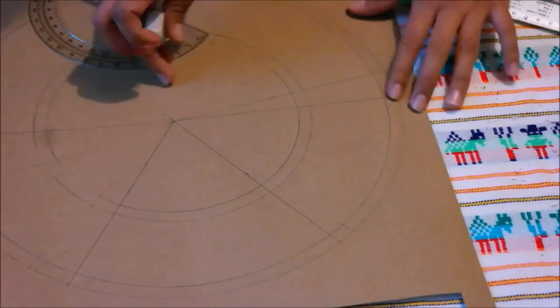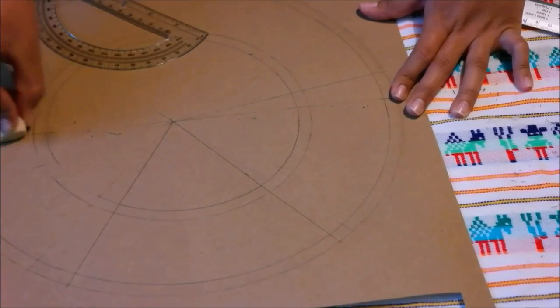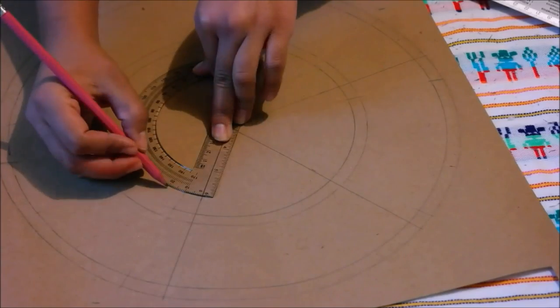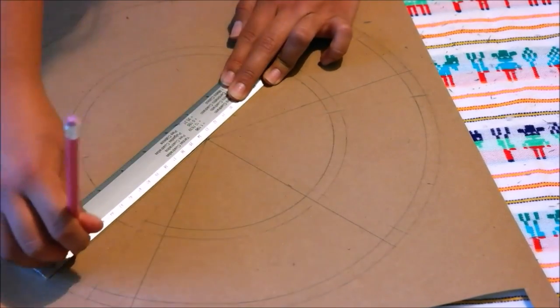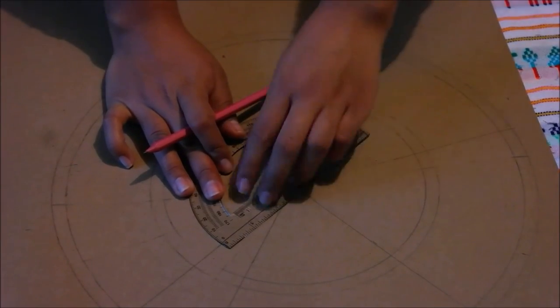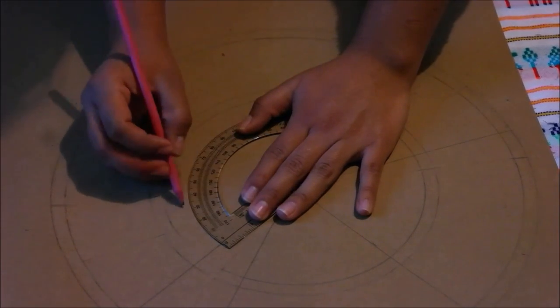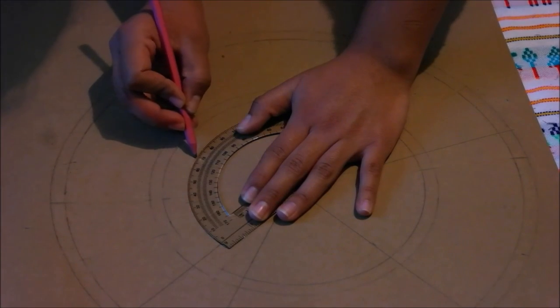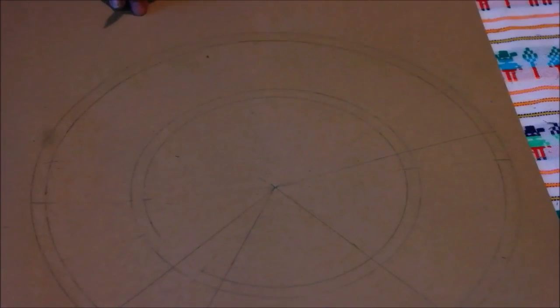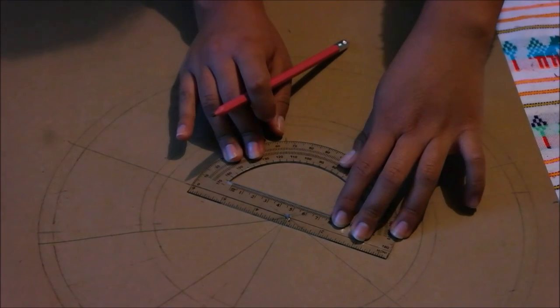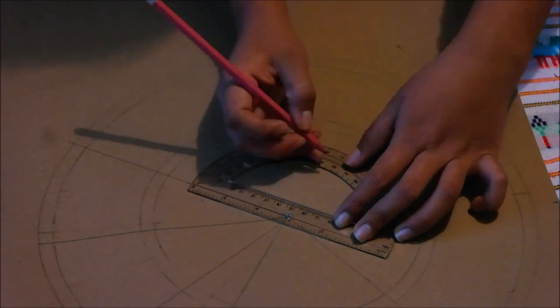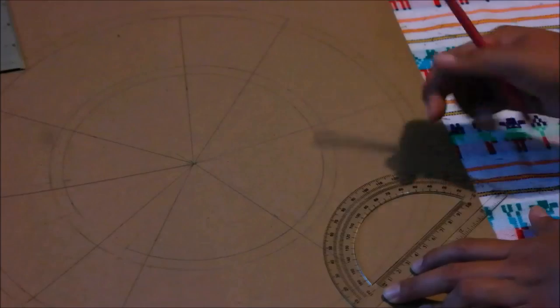Now erase the diameter and place the protractor on the right line and mark 20 degrees. And obviously trace another line to connect the mark and the center point. Place the protractor on the line that you just draw and mark at 35 and 70 degrees. Connect those marks to the center point. And finally place the protractor on the last line you draw and mark 65 and 95 degrees.